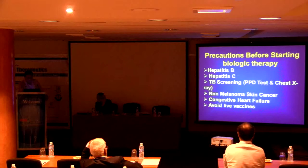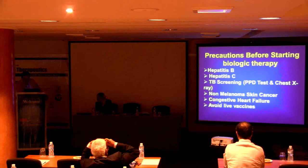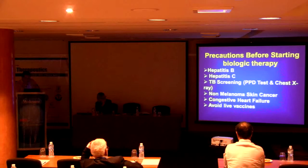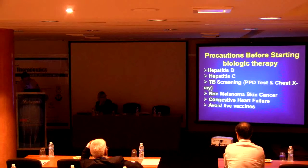For biologic therapy, we have some precautions before starting. First, screening for hepatitis B — not by HBsAg alone, but also for occult hepatitis B using core antibody IgG. If positive, do PCR. If the patient has occult hepatitis B, start antiviral therapy three months before beginning biologic therapy, and continue one year after end of therapy to prevent reactivation. Also screen for hepatitis C, TB — do not give if active TB — and screen for non-melanoma skin cancer and heart failure.